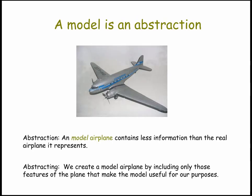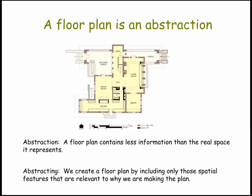A model — in this case a model airplane — is an example of an abstraction. Notice how the model contains much less information than the real plane. We create the model by leaving out details, or by including only those details or features of the plane that are useful to us in terms of why we're making that model.